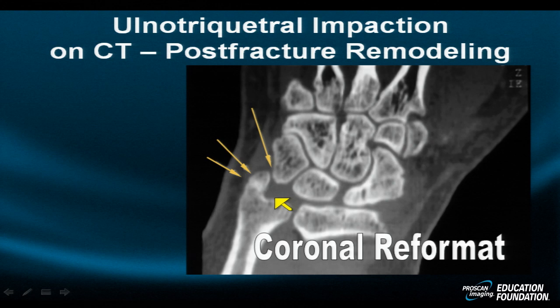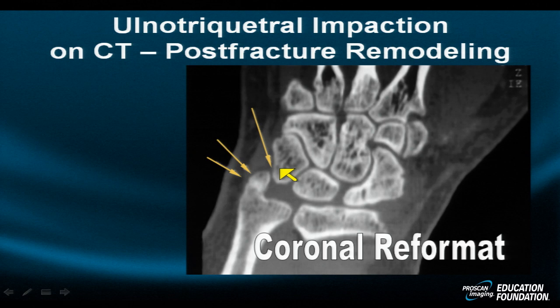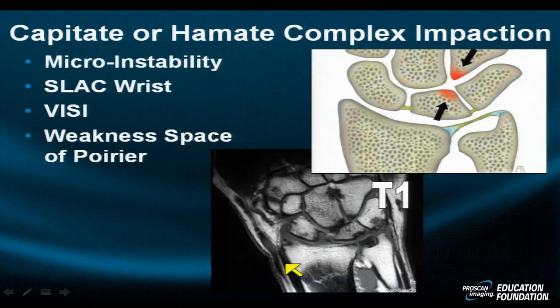Another example and cause of ulno-triquetral impaction is seen after trauma or fracture when healing is dysplastic or overgrown, as apparent on this 3D reconstructed coronal reformat sequence demonstrating even in the neutral position abutment of the ulnar styloid against the triquetrum. One can understand how this individual, a professional golfer, cannot ulnar deviate the wrist and therefore has lost significant yardage off of his ball.